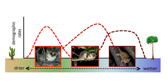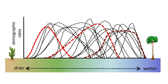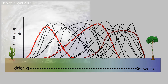Of course, each species' Hygric Niche is uniquely positioned and shaped. In this paper, we reconcile conflicting evidence regarding the role of rain on animal populations and build upon the foundation described here to make community-level and biogeographic inferences.